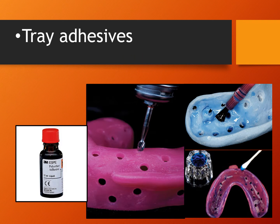Once the tray is fabricated, prior to making an impression a uniform thickness of tray adhesive should be applied, extending over the edges to improve adhesion. The tray adhesive should be allowed to dry so the solvent evaporates, creating a slightly roughened surface. The composition of tray adhesive includes acetone, heptane, and ethyl acetate.